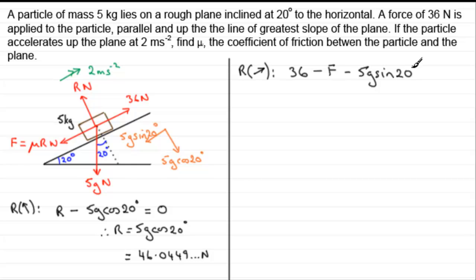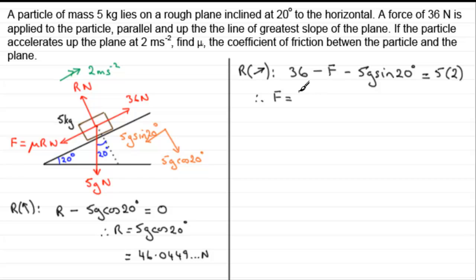Those are all the forces acting on the particle. Because it's accelerating up the plane, this resultant equals mass times acceleration: the mass is 5 kilograms and acceleration is 2 meters per second per second, so we apply F = ma. Rearranging to get F — adding F to both sides and subtracting 10 — gives: F equals 36 minus 10 minus 5g sin 20 degrees. Working this out on the calculator gives F equals 9.2410 newtons.